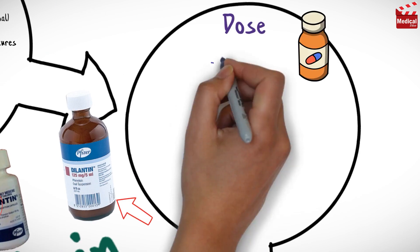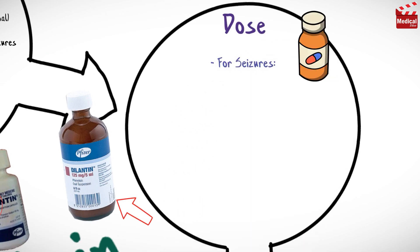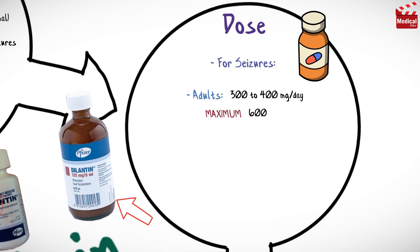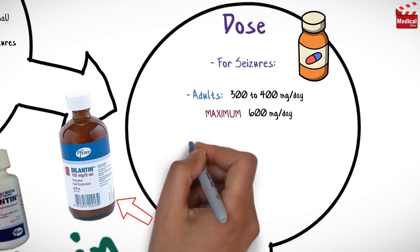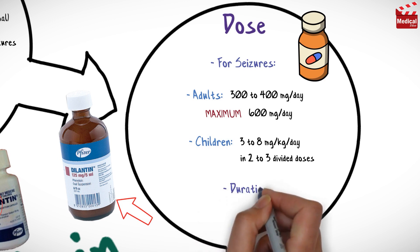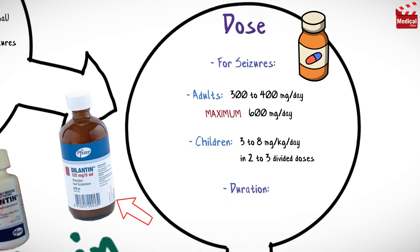The usual dosage for seizures for adults is 300–400 mg per day, and the maximum dose is 600 mg per day. For children, 3–8 mg per kg per day in 2–3 divided doses. The duration of treatment is determined according to clinical response.